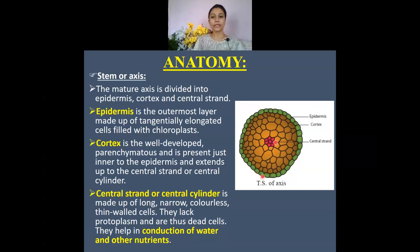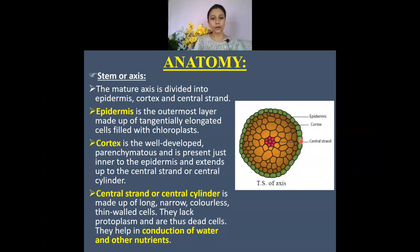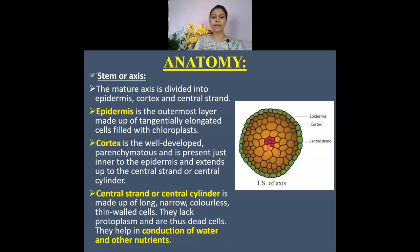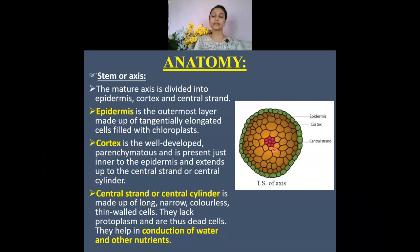The epidermis is the outermost layer made up of cells containing chlorophyll, so they can photosynthesize. Immediately below is the cortex, which is parenchymatous and extends toward the central strand. The innermost central strand — also called the central cylinder — is made up of long, narrow, colorless parenchymatous cells. It lacks protoplasm and is made up of dead cells, and its function is to conduct water and other nutrients.